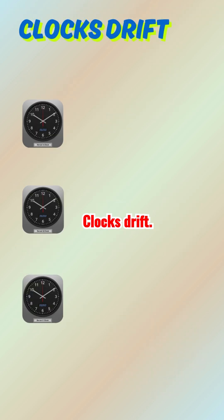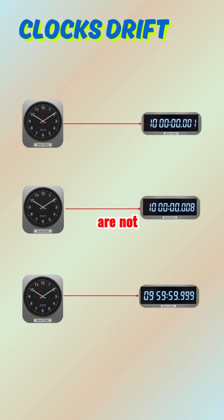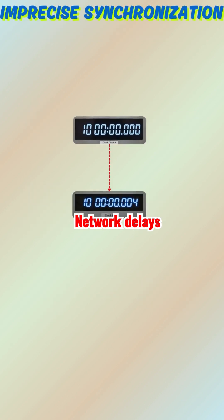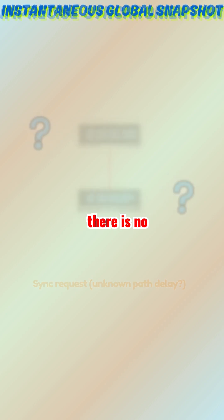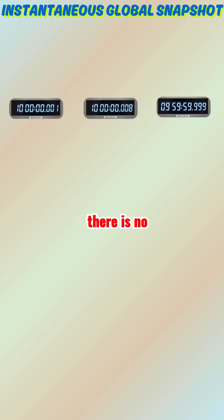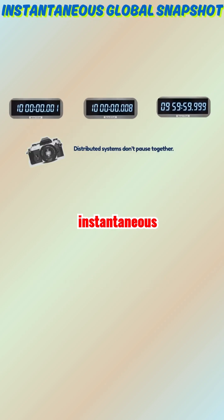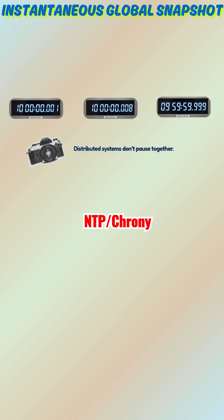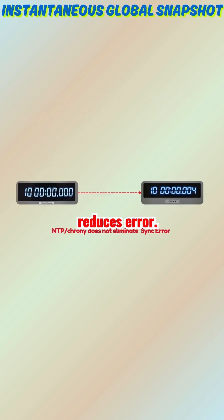Clocks drift — hardware oscillators are not perfect. Network delays and asymmetric routes make synchronization imprecise. And there is no mechanism to take an instantaneous global snapshot. Even NTP and Chrony reduce error; they do not eliminate it.